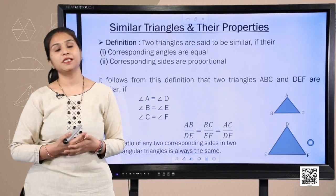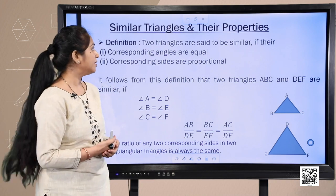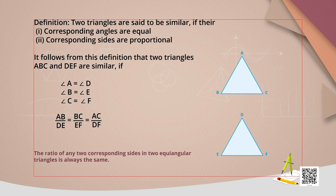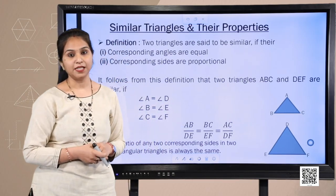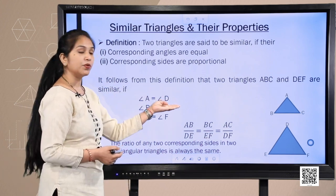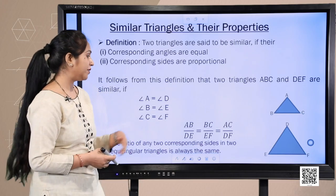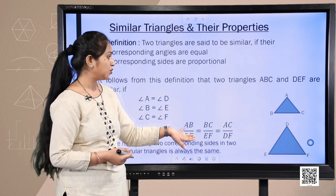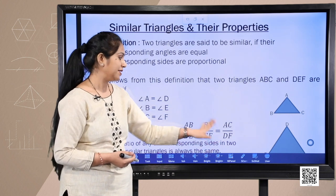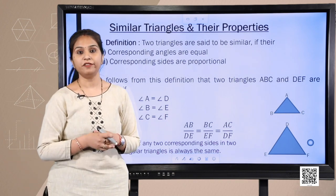Now let's extend the discussion to the similarity of triangles and their properties. When two triangles are similar, their corresponding angles are equal and their corresponding sides are in proportion. For triangle ABC and triangle DEF, we can write: angle A = angle D, angle B = angle E, angle C = angle F, and AB/DE = BC/EF = AC/DF. The ratio of corresponding sides of similar triangles is always equal.